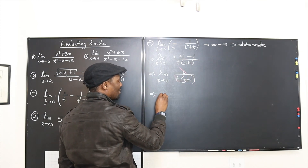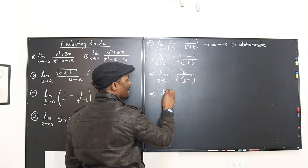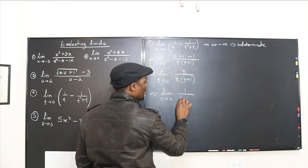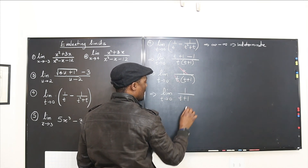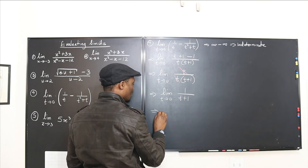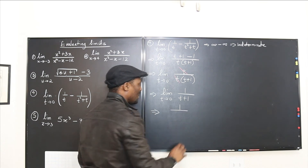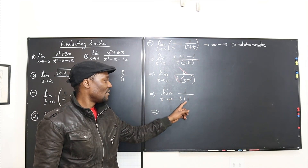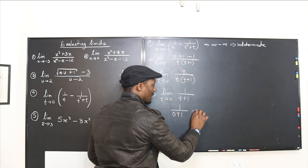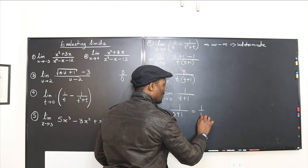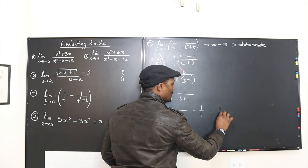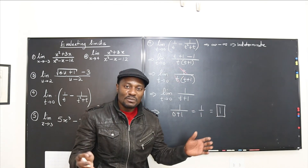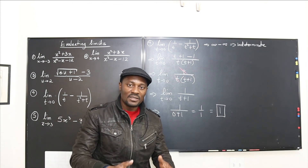The t cancels, leaving the limit as t goes to 0 of 1 over (t plus 1). Substituting t equals 0 gives 1 over (0 plus 1), which is 1 over 1, equal to 1. That is the limit of this expression — just by combining the terms.